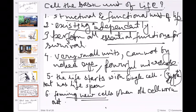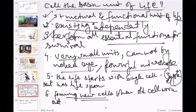So the main three points for why it is called the basic unit of life: first, structural and functional unit of life; second, cells can exist independently and perform all essential functions of survival; third, if you have more marks like four, five, or six, then add the additional points we discussed.